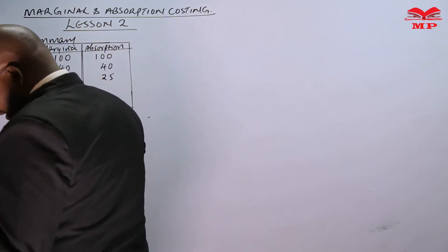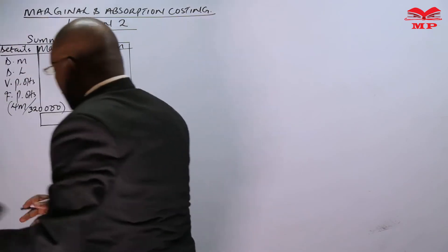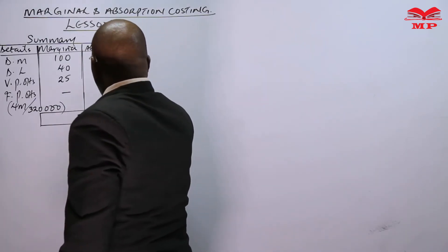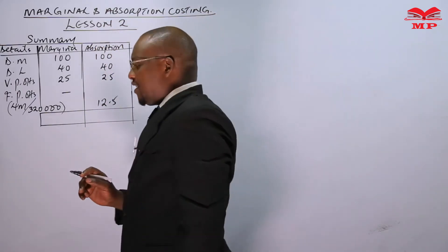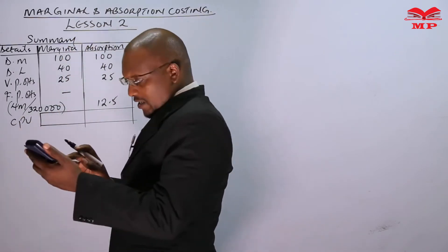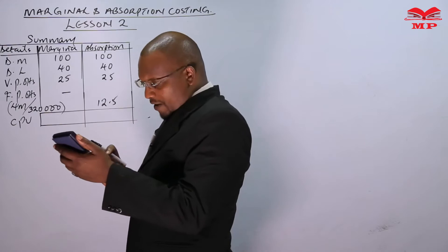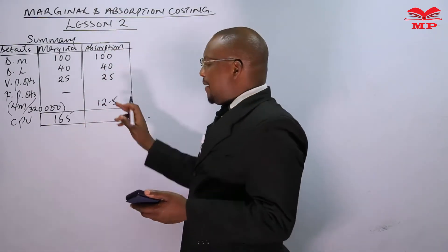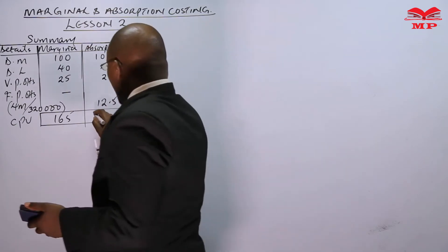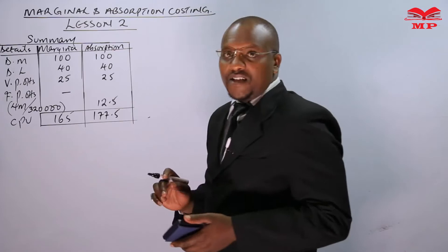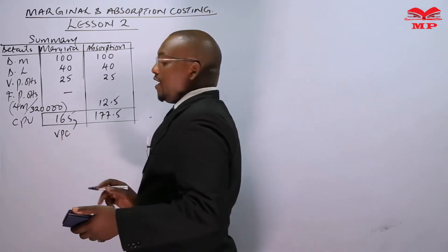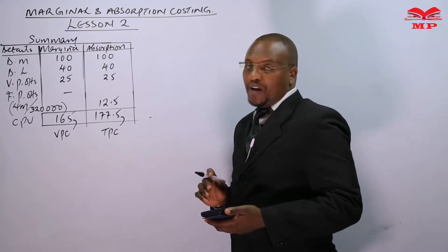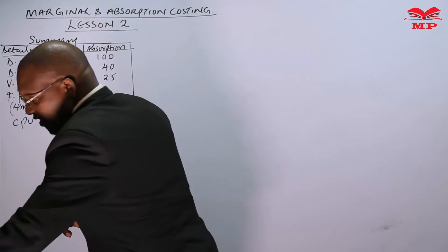The fixed production overhead rate is 4 million divided by 320,000 units, which gives us shillings 12.50 per unit. So the variable production cost (VPC) per unit is 100 + 40 + 25 = shillings 165. The total production cost (TPC) under absorption is 165 + 12.50 = shillings 177.50 per unit.